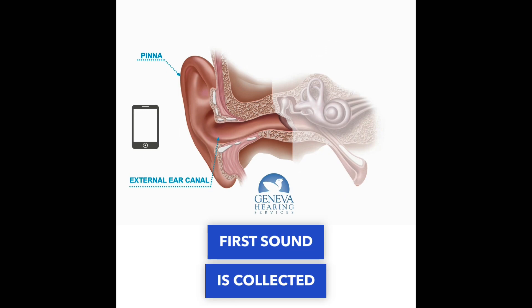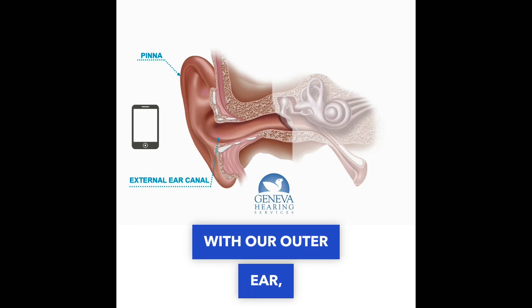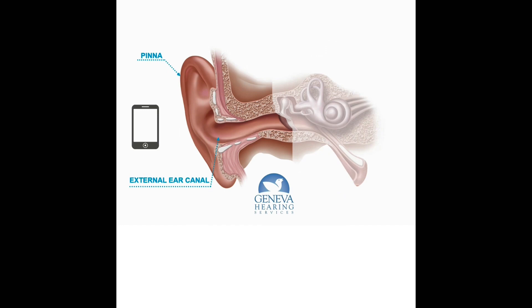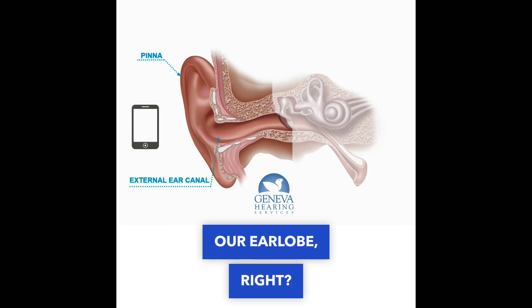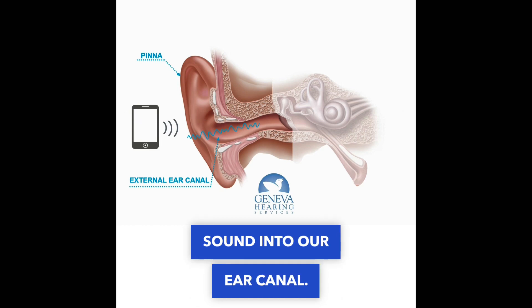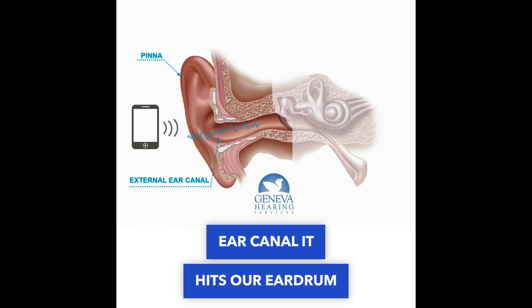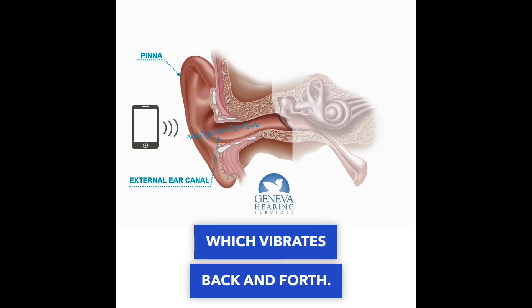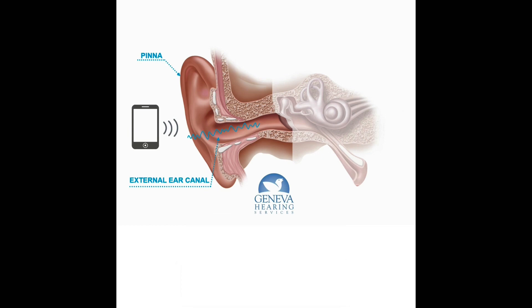First, sound is collected with our outer ear — our ear lobe. Our pinna is funneling the sound into our ear canal. When the sound goes into the ear canal, it hits our eardrum, which vibrates back and forth.